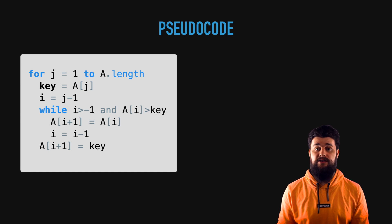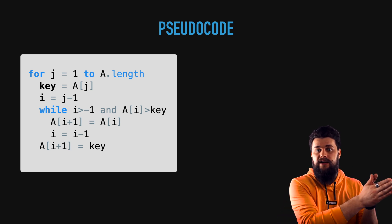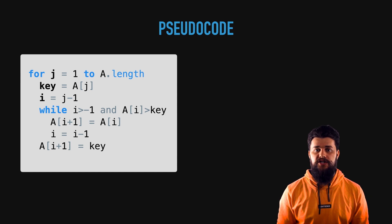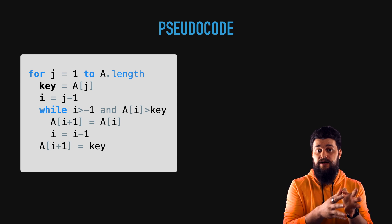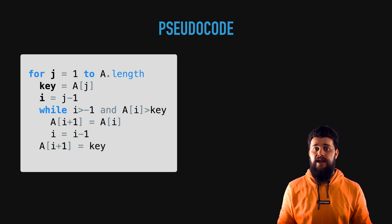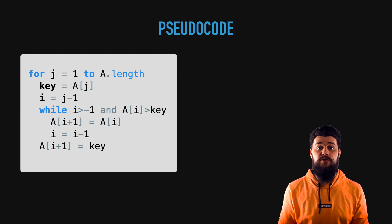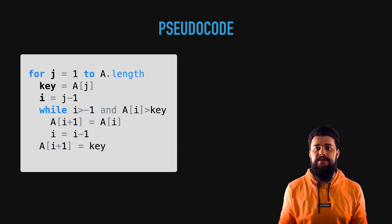Inside the inner loop we have a small condition — it's a while or for depending on your language. It checks that i has not reached zero, meaning it has not reached the beginning of the left side. The second condition checks if the specific element on the left side of the key is greater than the key itself. If it's greater, we have to shift it to the right, just like in the algorithm section. Once we've shifted all elements to the right, we have a free space for the correct position of the key, and all we have to do is fill up that position.